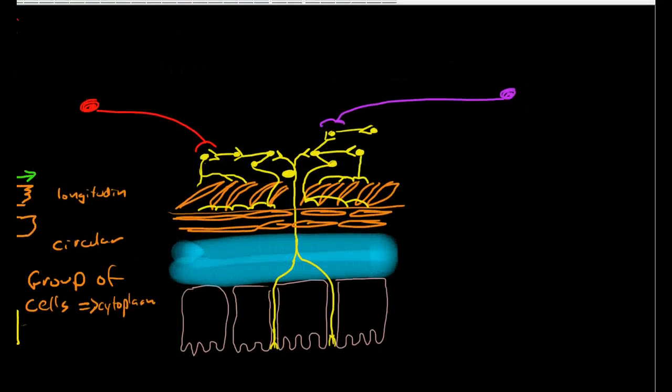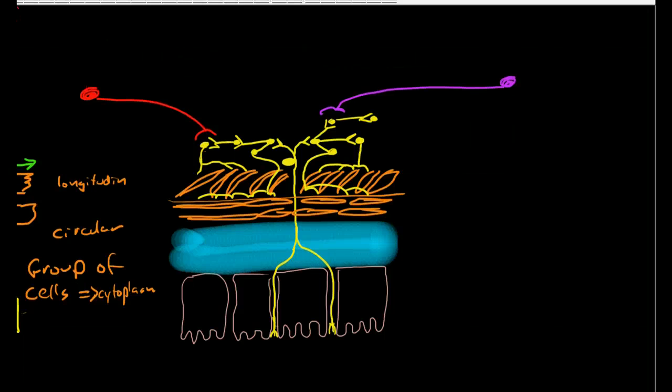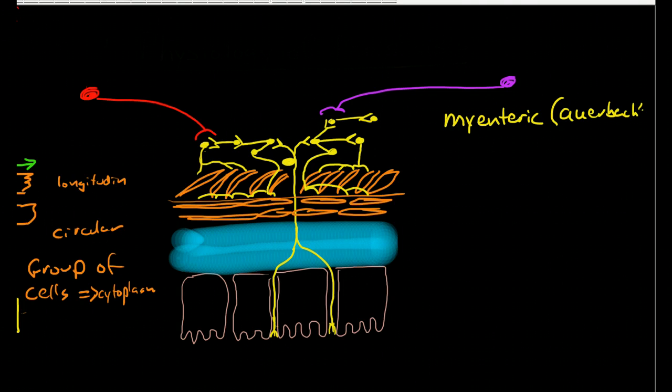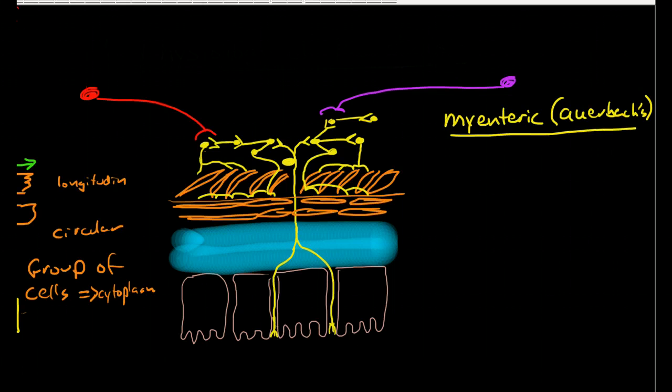Here we have a diagram of the nervous system of the gut, and in particular we're talking about the myenteric plexus. The older name for this, in case you come across this in some of your books, is Auerbach's plexus. It means the same thing. I think myenteric is the more common term these days.